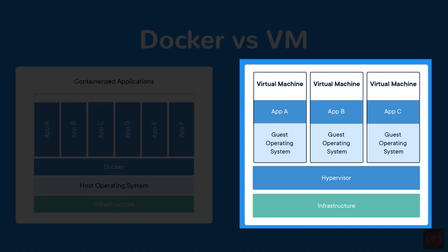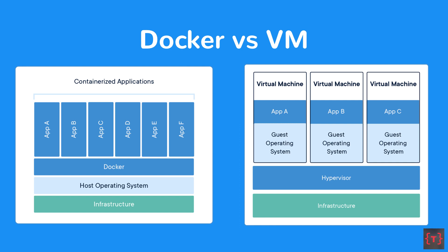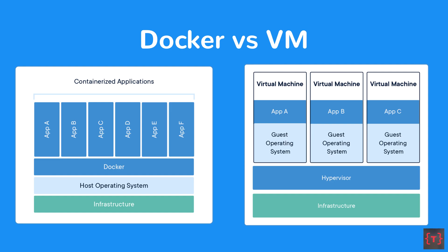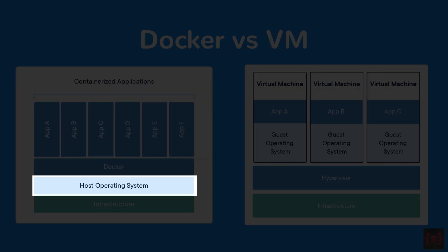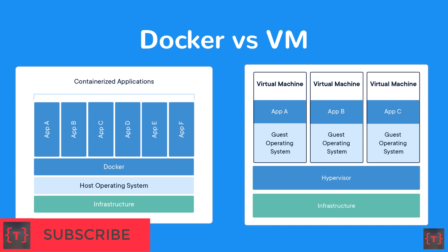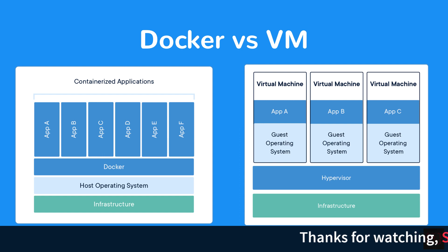This image from the Docker website shows the difference between Docker and virtual machines. On the right side we have virtual machines, and on the left side we have Docker containers — App A, App B, App C, and so on. To run multiple virtual machines, you need a hypervisor. With Docker, you have a host operating system, Docker is installed on top of that, and Docker manages each container. In the case of virtual machines, each VM has its own operating system, whereas Docker uses only a single operating system — so there is less load on the infrastructure.